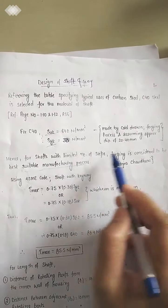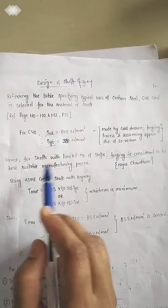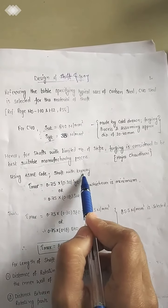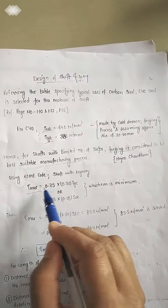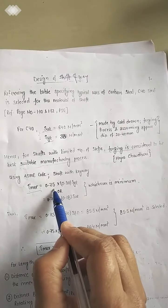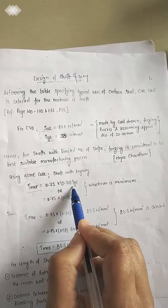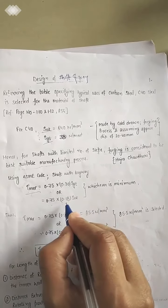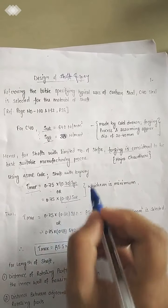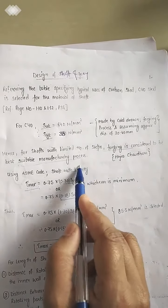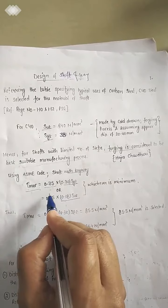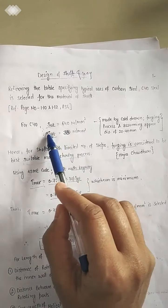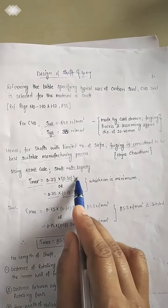We are considering that the shaft is made from the forging process as the best suitable manufacturing method. Using the ASME code for a shaft with a keyway, we know tau_max (maximum shear stress) equals 0.75 × 0.30 × Syt, or 0.75 × 0.80 × Sut. Since we are using a key, we apply the formula with keyway, so we multiply both terms by 0.75.